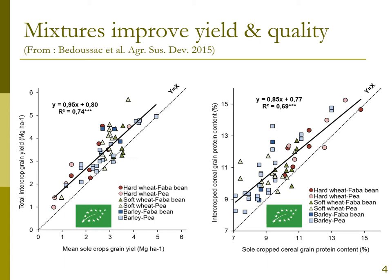The interest of intercropping is most pronounced when we have low or limited sole crop cereal grain protein content. In that case, the increase in grain protein concentration is much higher compared to situations with very high grain protein concentration in the sole crop cereal. The detailed explanation of this process was covered in previous talks.